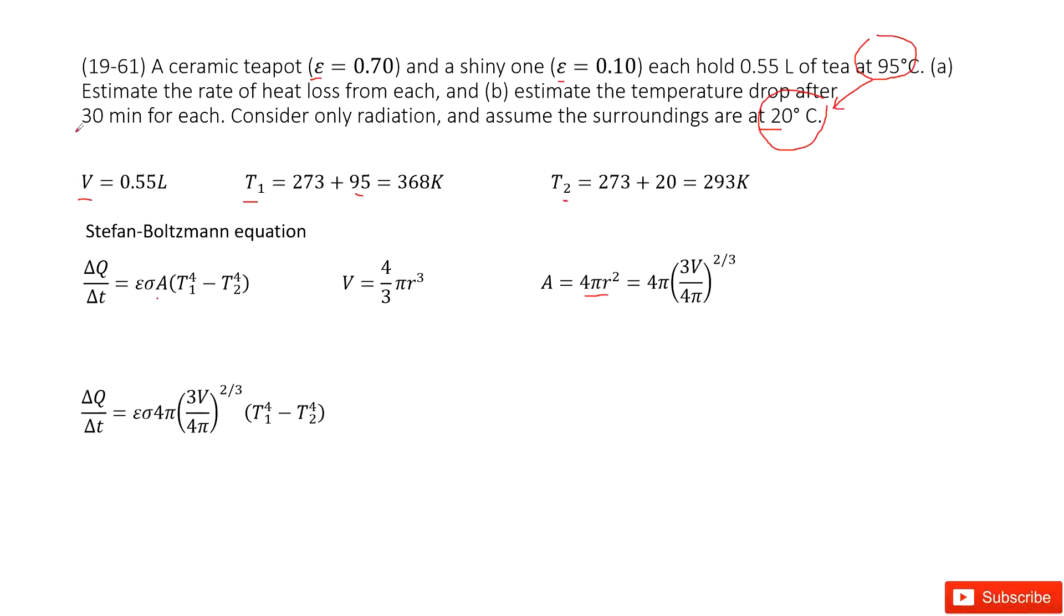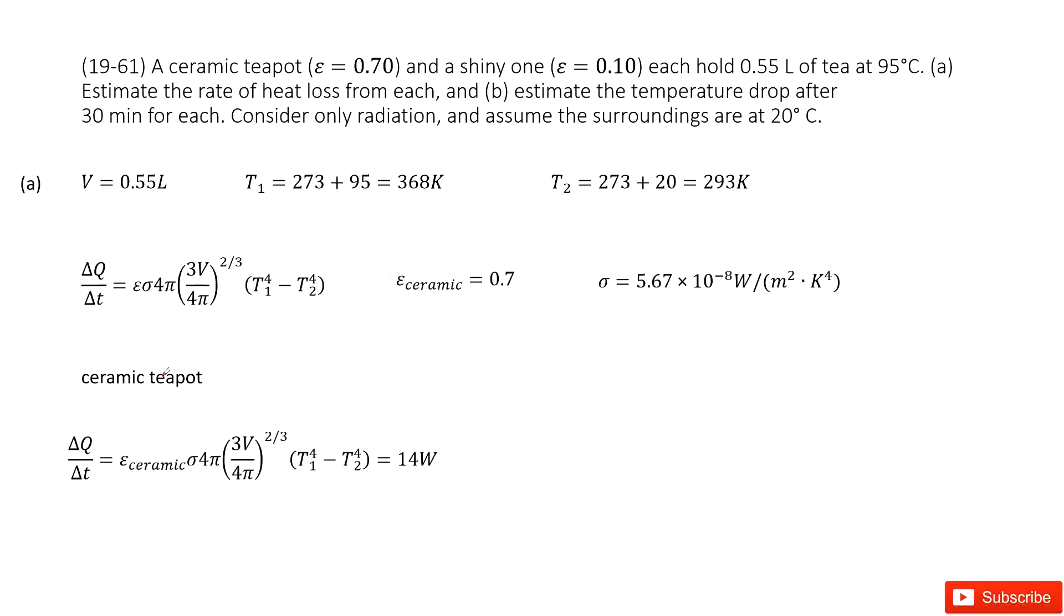We use the volume formula to get r, then write r in the surface area term. Then we input the surface into the Stefan-Boltzmann equation. All quantities are now given: T₁, T₂, V, epsilon, and sigma. Things become easy.